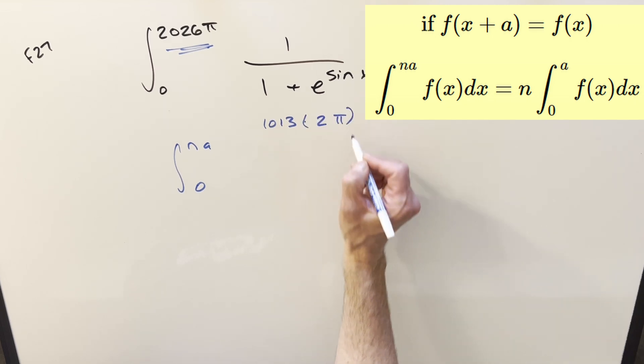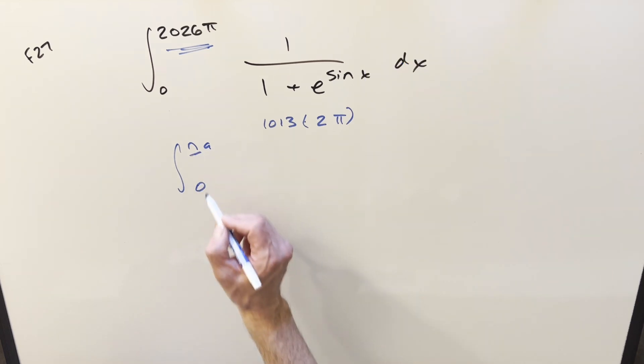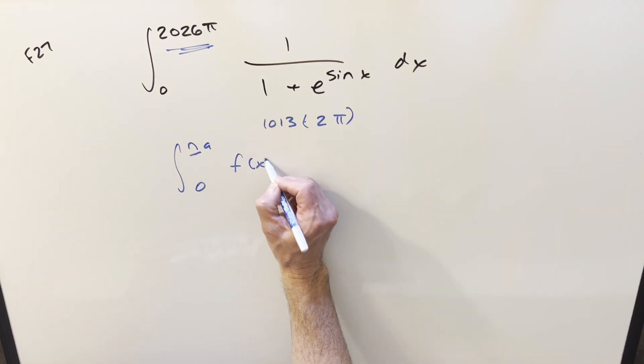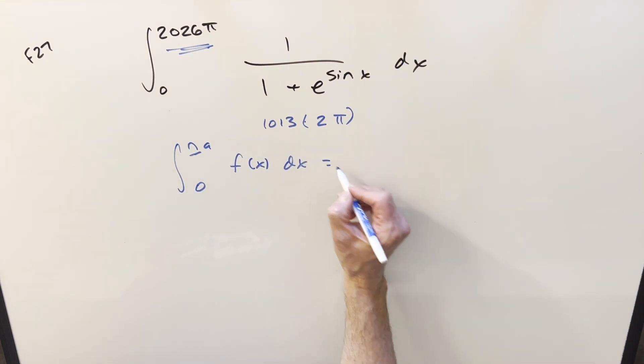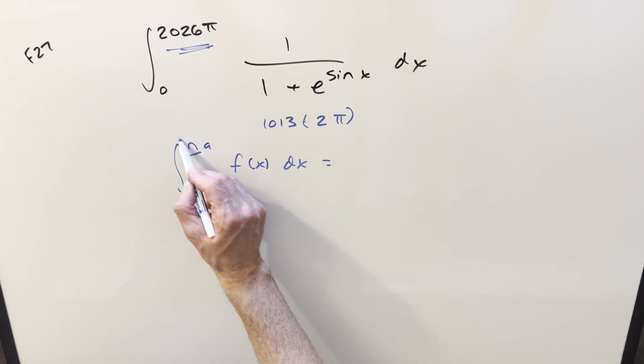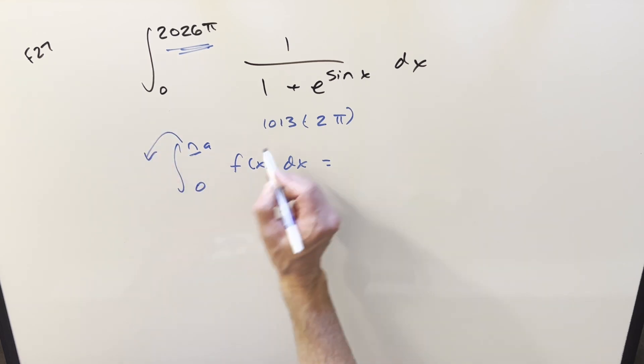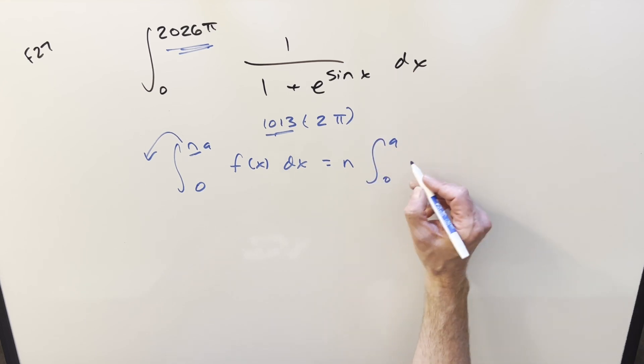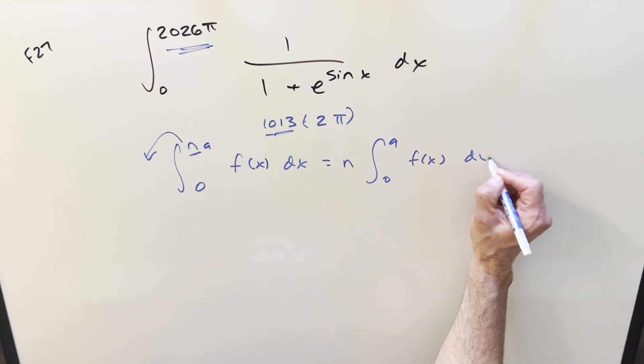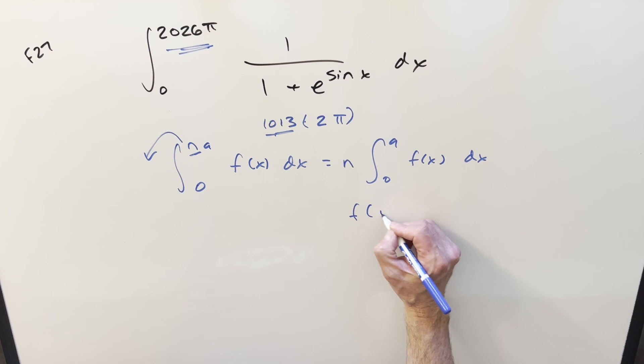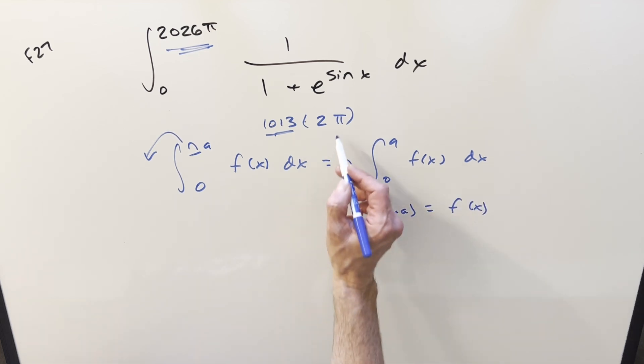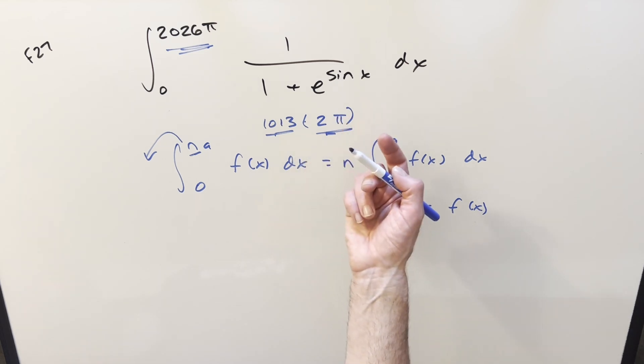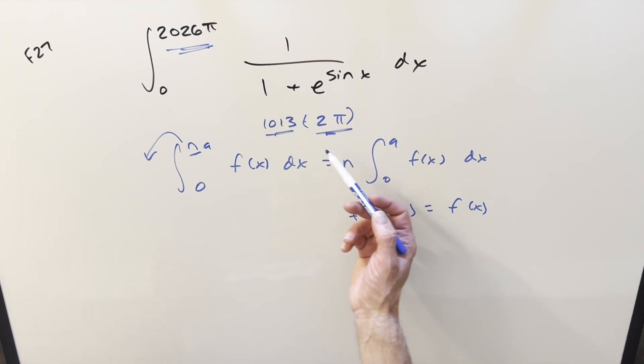That way 2π is going to be nice to work with. What our identity says is we can bring the n, which is 1013, out front and write it as n times the integral from 0 to a of f(x). Now this reduction only works when f(x + a) = f(x), but we know it's not going to be a problem as we chose it to be 2π. Sine is 2π periodic, so this is going to work and allow us to reduce the bound.